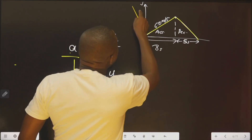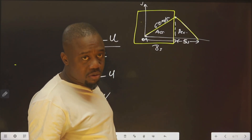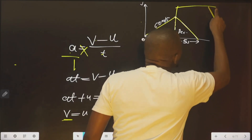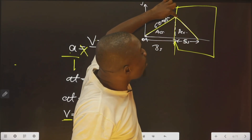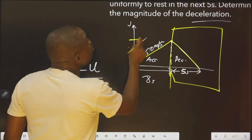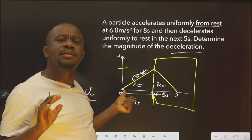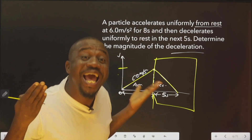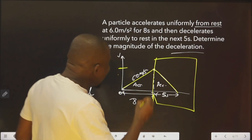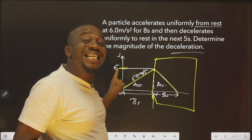For the acceleration leg, we know it started from rest, so the initial velocity u = 0. The final velocity was not given to us. Why do we need the final? Because when I consider the deceleration side, it also needs a starting point. The beginning of the deceleration is the end of the acceleration — those two are the same point.